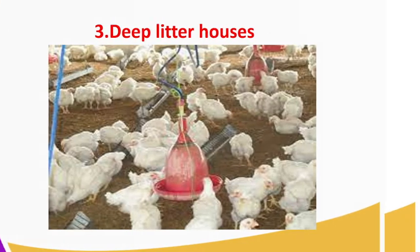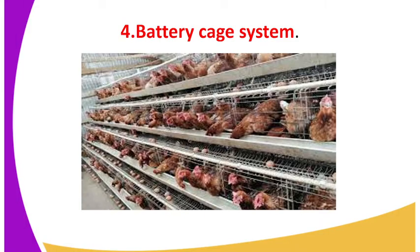The fourth type is the battery cage system. In the battery cage system, as displayed here, each cage holds one to three birds. The system is mechanized whereby, once eggs are laid, there is a system of levers to remove the eggs from the cage. This will control vices such as egg eating.